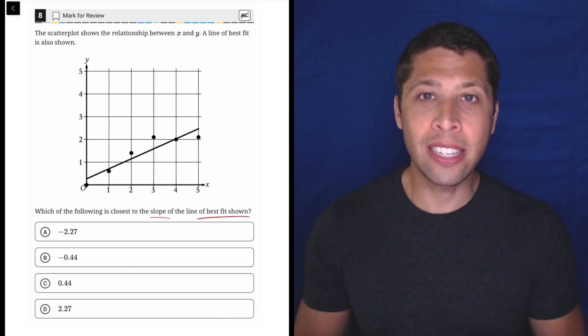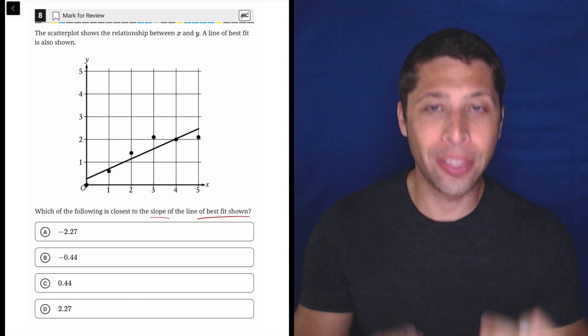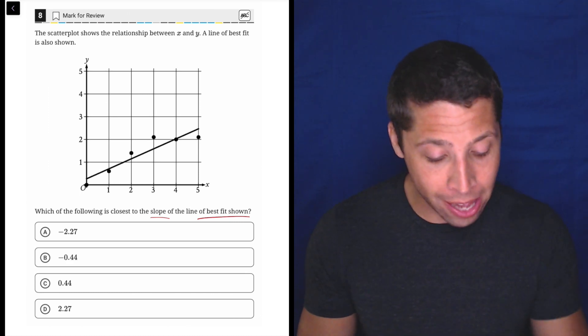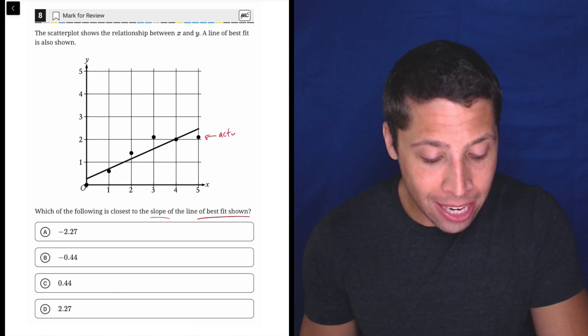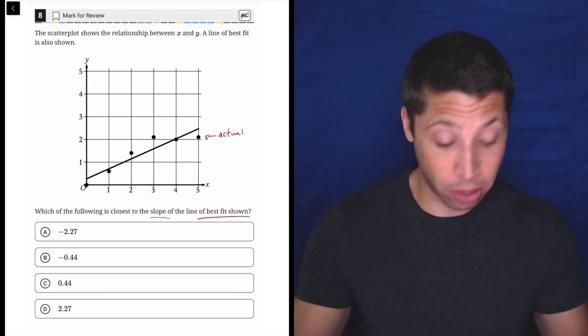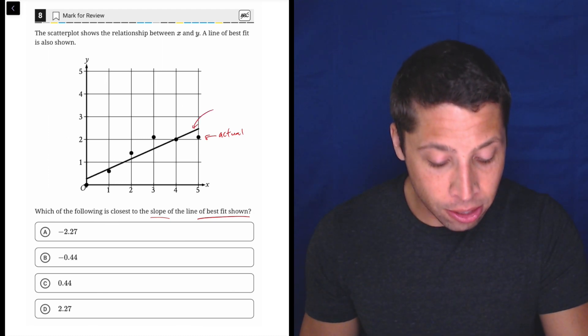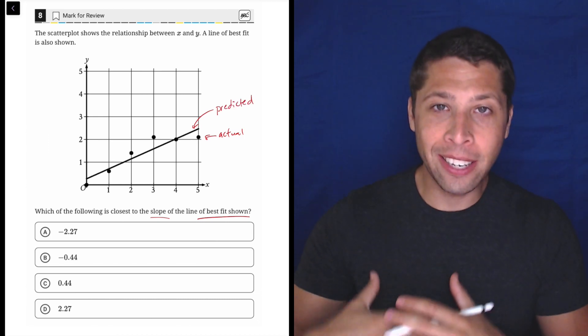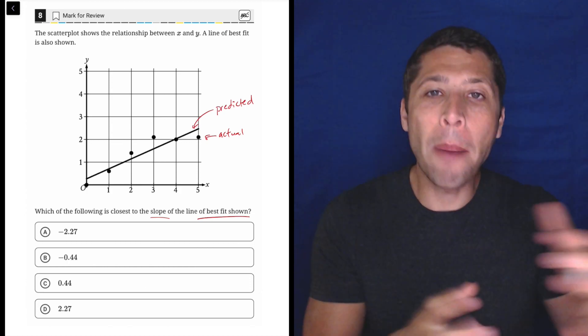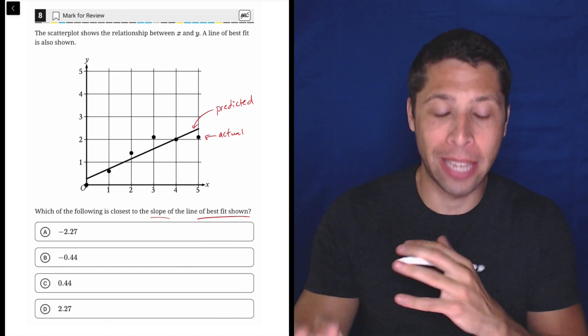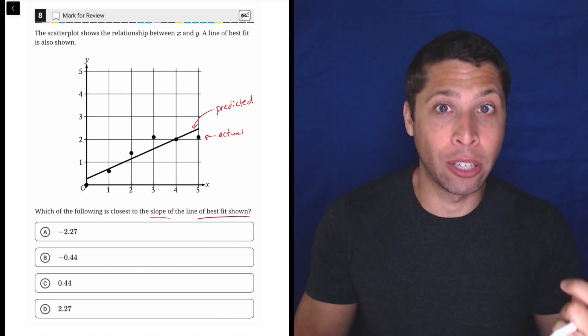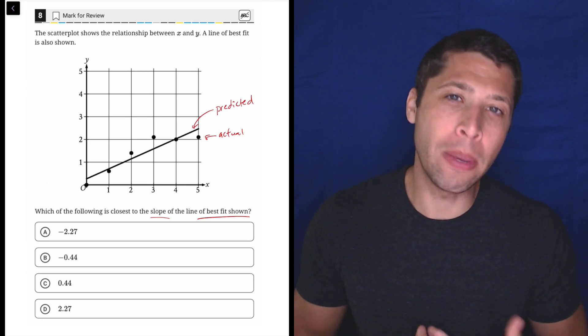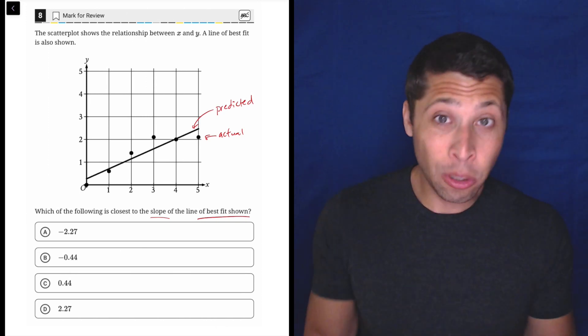Most of the time that the SAT gives us scatter plots, we don't care about the dots, unless they specifically ask for the actual values. That's what the dots are, the actual values of whatever experiment or whatever we did. The line is going to be the predicted values. So yes, the predicted value, the line, is mathematically kind of coming from the dots. We never have to do that math. It's very complicated, but it's kind of like an average. But when they ask questions about a scatter plot, it's almost always going to be about the line itself. So just ignore the dots. It doesn't matter.